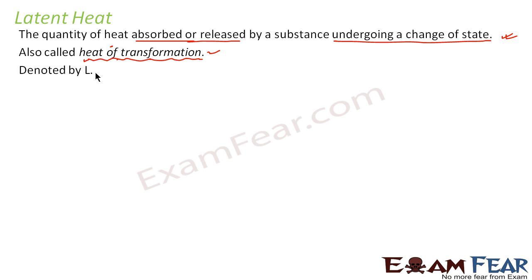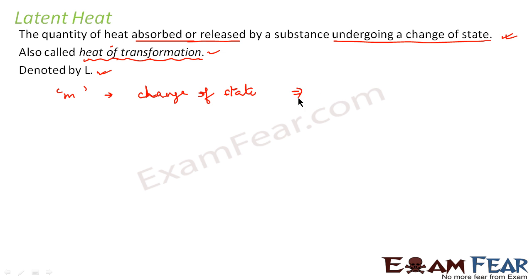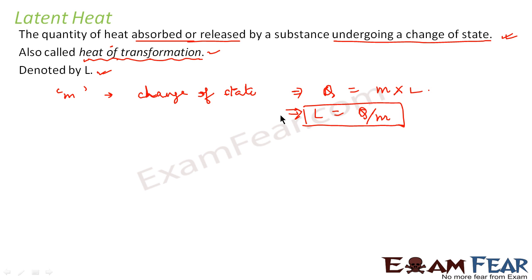Latent heat is denoted by capital L. If we have a substance of mass M undergoing a change of state, and the quantity of heat required is Q, then Q equals M times L. So latent heat L is nothing but the amount of heat required per unit mass.